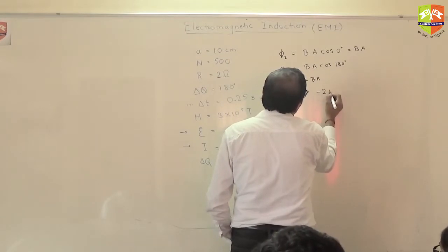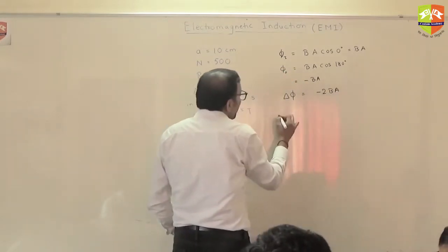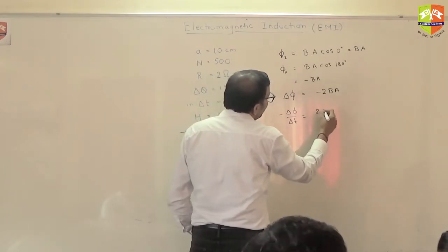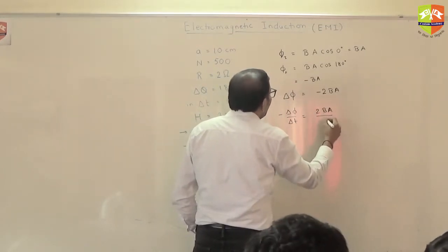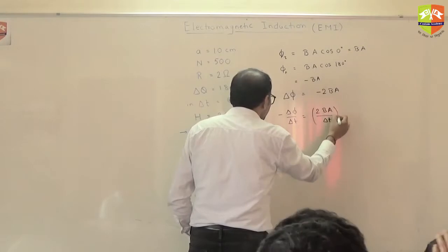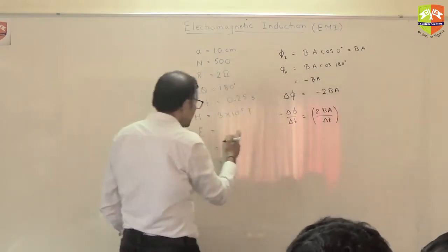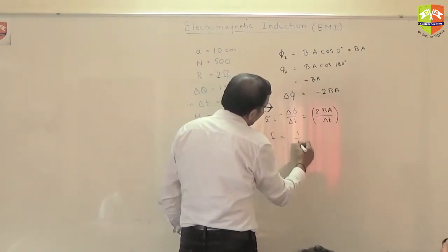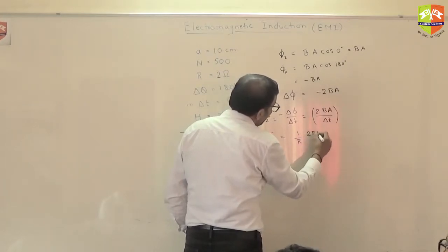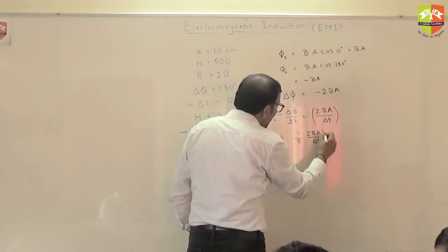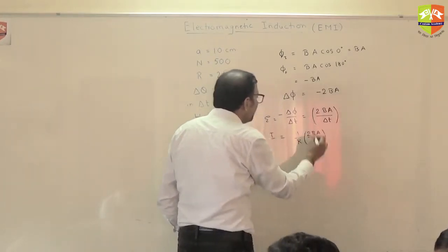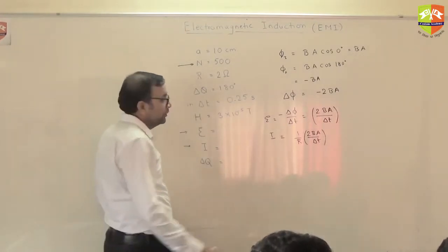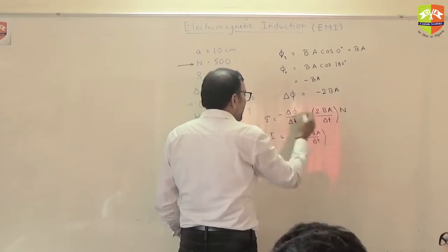Minus of delta phi by delta t is the EMF, that is 2BA divided by delta t. This is EMF. Current is (1/R) times (2BA / delta t). One thing to notice here — there are a number of turns, so you should multiply with N.